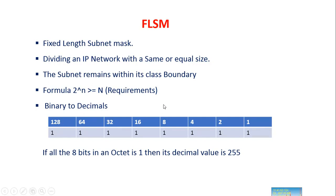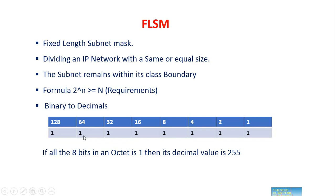An IP address is a 32-bit binary number, represented and divided into 8 octets. Each octet has 8 bits, and these 8 bits have corresponding decimal numbers. For example, if all 8 bits in an octet are 1s, the value of that octet is 255. Before going into subnetting, we are supposed to be thorough in the values of the powers-of-2 table, as that makes subnetting much easier.